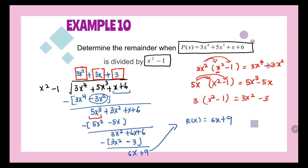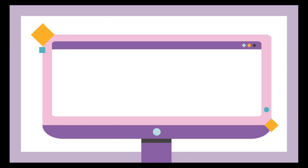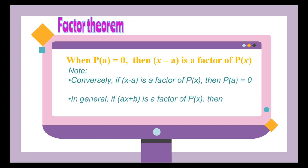Now let's look at factor theorem. When p(a) equals 0, then x minus a is a factor of p(x). That means when we substitute with our divisor and get 0, we can say it is a factor — 0 here is the remainder. So once the remainder is 0, the divisor is a factor. In general, if ax + b is a factor of p(x), then p(−b/a) equals 0.